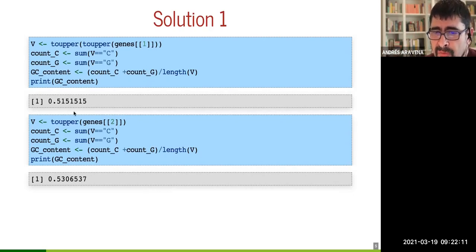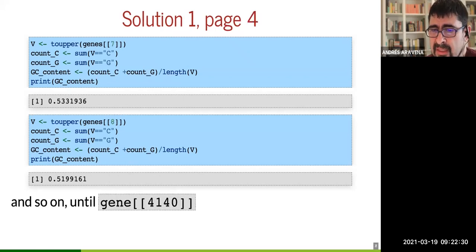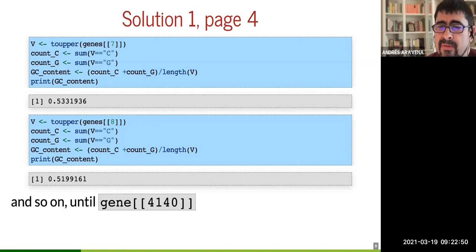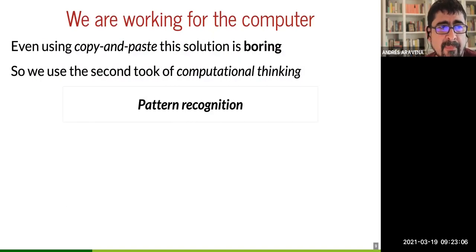For the first gene we got 51% GC content, for the second 53%, for the third 56%, for the fourth, fifth, sixth — and you should keep doing it. What do you think about this strategy? Do you like the idea of doing it one by one, copy and paste? Even when I copy and paste I made a mistake, so this is boring.